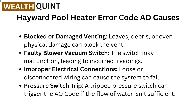Faulty blower vacuum switch — the switch may malfunction, leading to incorrect readings. Improper electrical connections — loose or disconnected wiring can cause the system to fail. Pressure switch trip — a tripped pressure switch can trigger the AO code if the flow of water is not sufficient.